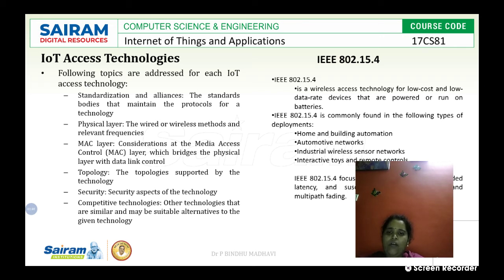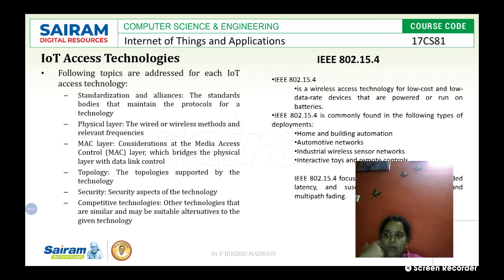The data link layer is responsible for data transmission. Data is transmitted in terms of small units or packets — groups of data items. The data link layer takes data bits, forms packets, and goes for reliable transmission. Reliable transmission means the source and destination are identified, error detection occurs, and transmission proceeds correctly. So the data link layer is responsible for data transmission between source and destination.